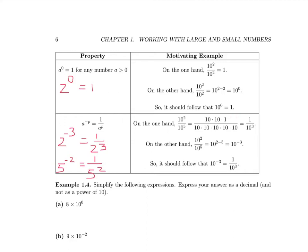On the one hand, 10 squared is 10 times 10, and 10 to the 5th is 5 factors of 10. We can cancel 2 factors of 10, leaving us with 3 factors of 10 in the denominator and an answer of 1 over 10 cubed. On the other hand, using the exponent property, 10 squared divided by 10 to the 5th gives 10 to the 2 minus 5, or 10 to the negative 3. Since these answers must be equivalent, 10 to the negative 3 equals 1 over 10 cubed, which is consistent with the property.